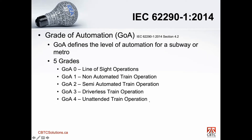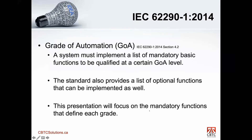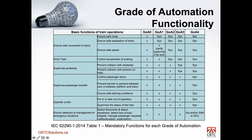Grade of automation is defined in section 4.2. It has five levels: GoA 0, 1, 2, 3, and 4. GoA 0 is line of sight, which is no signaling. GoA 1 is non-automatic train operation, which would be more akin to a conventionally signaled system. Then GoA 2, 3, and 4 are the levels where automation is introduced at various degrees. In order to qualify for a certain level, that system must implement a list of mandatory basic functions. The standard also discusses optional functions, but the focus of this presentation is only on the mandatory functions that define each GoA level.